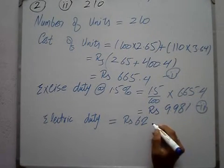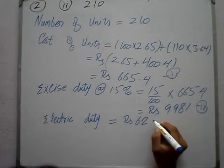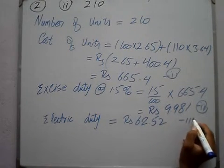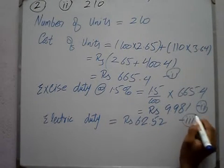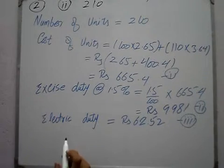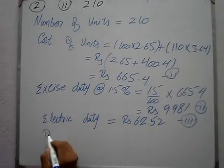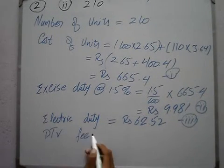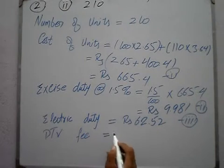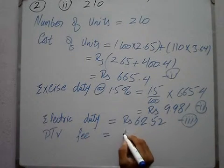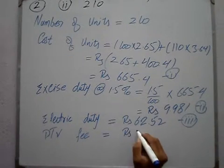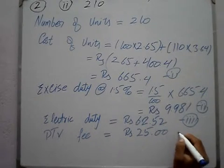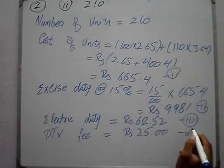Electricity duty: RS 62.52 — this is item 3. PTB fee (Pakistan Television fee) — item 4 — is RS 25.00.